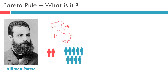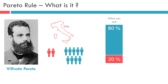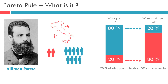Let us imagine yourself as a salesman and you want to achieve a monthly sales target. During the month, you would do a lot of activities to achieve it. However, at the month end, when you analyze all the activities you did during the month, you would notice that 80% of the activities helped you achieve only 20% of the sales target. And the rest 20% of the activities helped you achieve 80% of the sales target for the month.